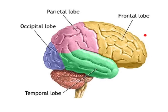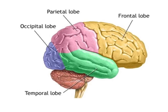The cerebral cortex is divided into four lobes: the frontal lobe, the temporal lobe, the occipital lobe, and the parietal lobe. The occipital lobe is in charge of receiving and processing the information from your eyes. It helps you see.